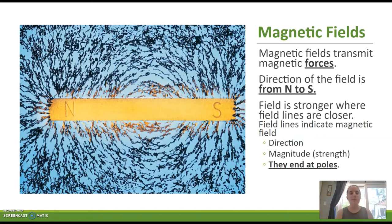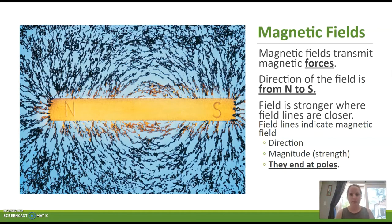The direction of your magnetic field is always going to run from north to south. On this magnetic field, the stronger the magnetic field is where those lines are closer. It's kind of like our vectors in this way — it shows magnitude and direction. It's always going to run from north to south, and the closer those field lines are together, the stronger the force.